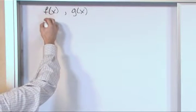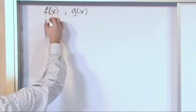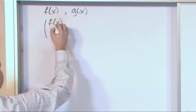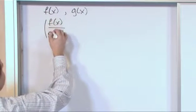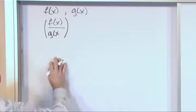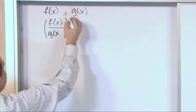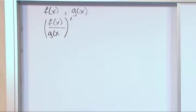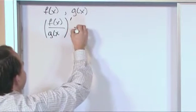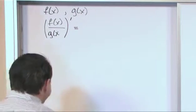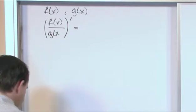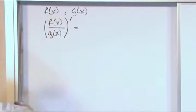Then, if you're going to take the derivative of what we call the quotient, we'll have f(x) divided by g(x). So we just take these two functions and divide them by one another. Take the derivative, that's what this means. The way you do that is as follows.